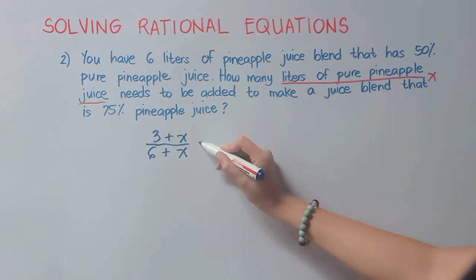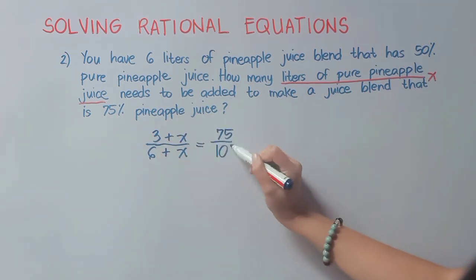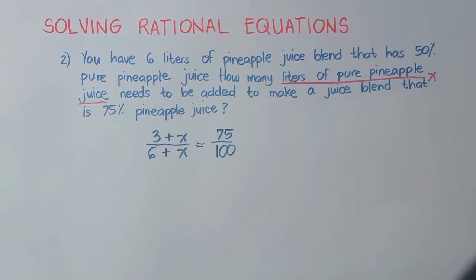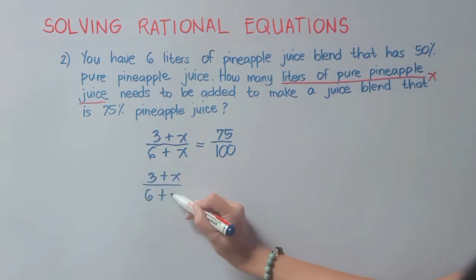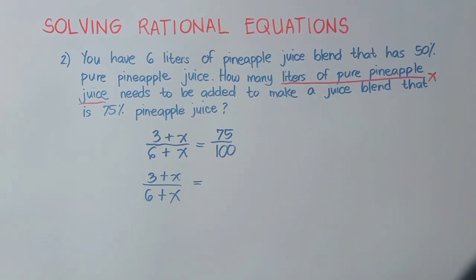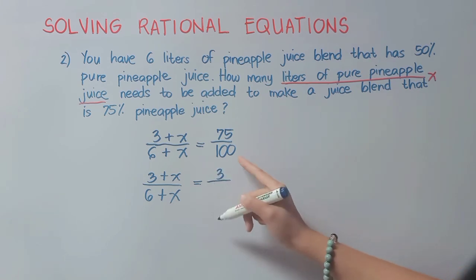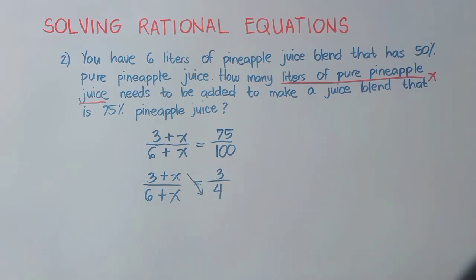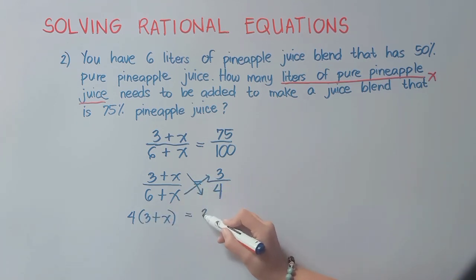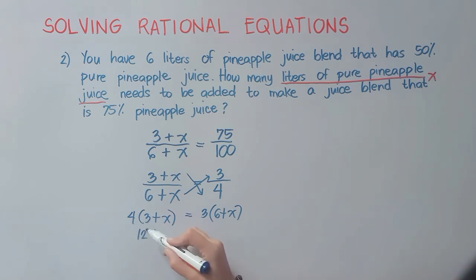The result should increase the concentration to 75%, which is 75/100. Simplifying — common factor is 25 — gives 3/4. Since there's one rational expression on both sides, we cross multiply: 4 × (3 + x) = 3 × (6 + x). Distributing: 4 times 3 is 12, 4 times x is 4x, equals 3 times 6 is 18, plus 3x.